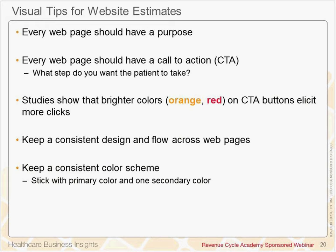Another thing to keep in mind is color schemes. Studies show how important color is to prompt users to take action. Brighter colors like orange and red can actually elicit a 30% higher click rate than colors like blue and green. Keep that in mind as we show you some examples of hospital websites here in just a few minutes.